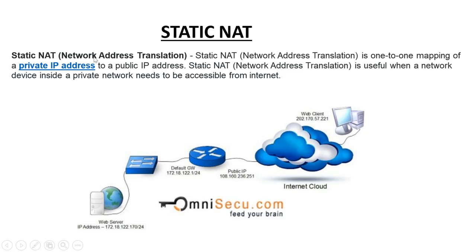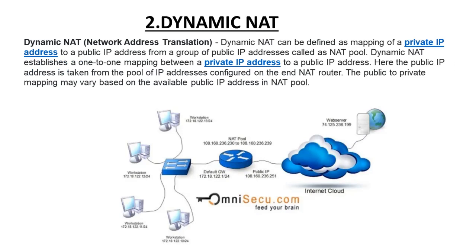The second type is dynamic NAT. Dynamic NAT can be defined as mapping of a private IP address to a public IP address from a group of public IP addresses called a NAT pool. Dynamic NAT establishes a one-to-one mapping between a private IP address and a public IP address, where the public IP address is taken from the pool of IP addresses configured on the NAT router. The public-to-private mapping may vary based on the available public IP address in the NAT pool.